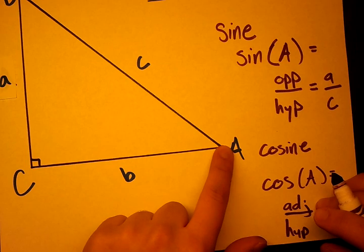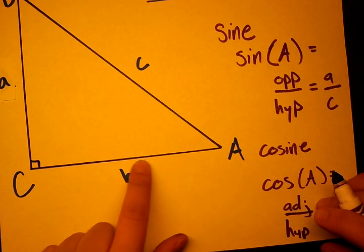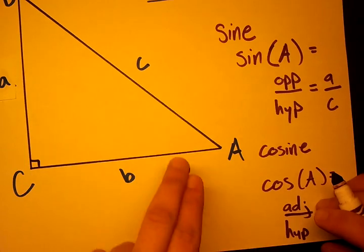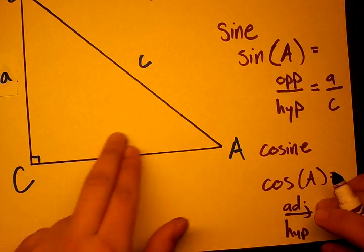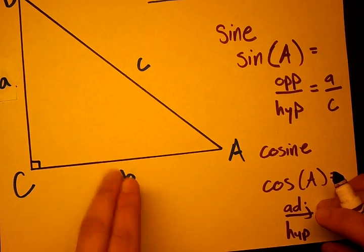So if we look at A again, what is the side adjacent? So adjacent just means touching it. So b and c are touching it, but when we do cosine, touching just refers to the one that's not the hypotenuse, so it has to be b.